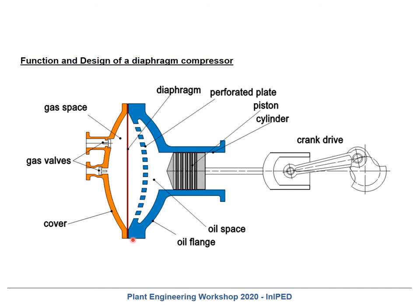This part of the diaphragm head is completely filled with oil, and since the oil is more or less incompressible, the piston movement is directly connected to the deformation of the diaphragm. On the other side of the diaphragm we have the process gas which is compressed. You have the same valves as for reciprocating compressors — at the outside of the center we have the suction valve, and in the center of the diaphragm we have the discharge valve. These valves are, except for size, identical to classical reciprocating compressor valves.